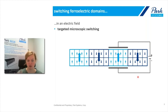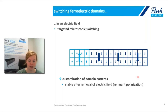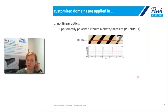For example, by using an AFM tip to apply a DC voltage, we can switch the domain orientation only in the particular area below the AFM tip. That allows us to customize the domain patterns to the application we need. What is also required for the application of these materials is that the switched domain orientation remains stable even after we remove the externally applied electric field. These customized domain patterns are applied, for example, in non-linear optics.